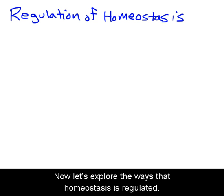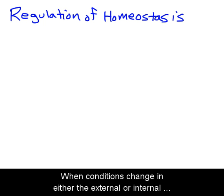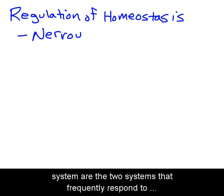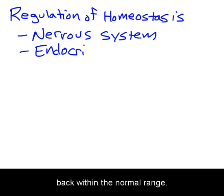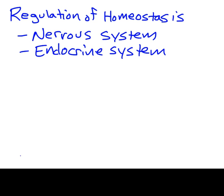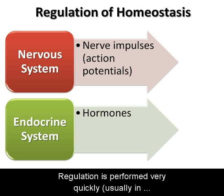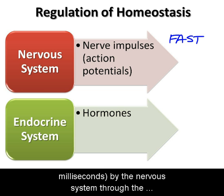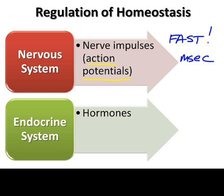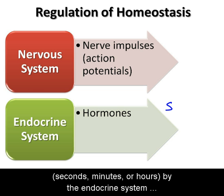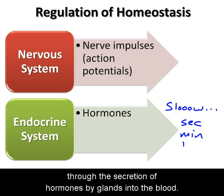Now let's explore the ways that homeostasis is regulated. When conditions change in either the external or internal environment, the nervous system and the endocrine system are the two systems that frequently respond to and correct the change in order to return the condition back within the normal range. Regulation is performed very quickly — usually in milliseconds — by the nervous system through the generation of electrical signals called action potentials, or nerve impulses, that are sent to organs to bring the condition back to normal. In contrast, regulation is performed more slowly — seconds, minutes, or hours — by the endocrine system through the secretion of hormones by glands into the blood.